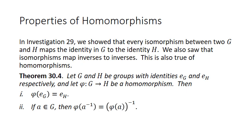Theorem 30.4: let G and H be groups with identities E_G and E_H respectively, and let phi from G to H be a homomorphism. Then: one, the image of the identity in G under phi is going to be E_H; and two, if A is an element of G, then phi of A inverse equals phi of A, inverse. Those are two important properties that we'll need today.